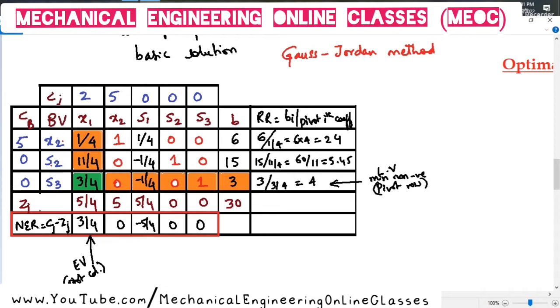In case, for example, the table that we are seeing here, under x1, Cj minus Zj has come out to be a positive one. So this table is for a max type of problem, right? So, 3 by 4 is a positive number. The rest all are zeros or negatives.